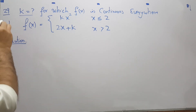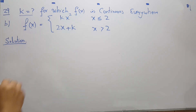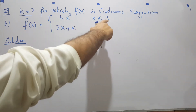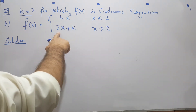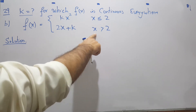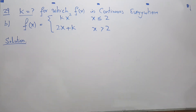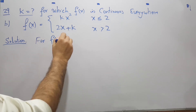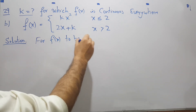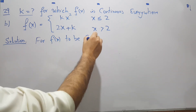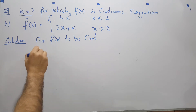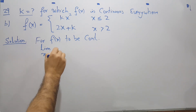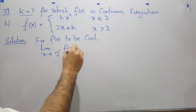In the second part, the function has been changed. The function is now kx squared when x is less than or equal to 2, and 2x plus k when x is greater than 2. Again, for a function f of x to be continuous, the left hand limit and the right hand limit must be the same.